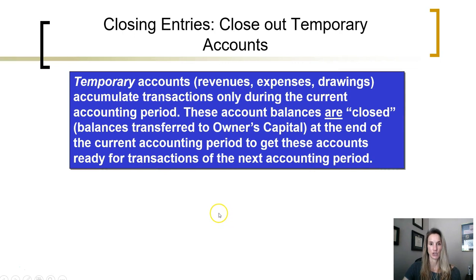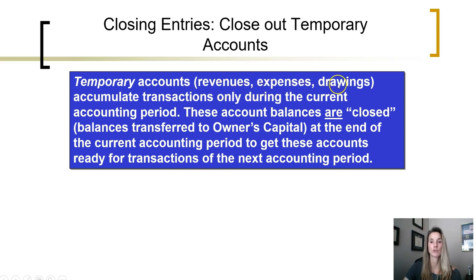When we are doing closing entries, the only accounts we close out are the temporary accounts — and by temporary we mean the accounts that hold transactions in them temporarily until the reporting process is done. Those accounts are revenues, expenses, and the owner's withdrawals, or the drawings account. These accounts accumulate transactions only during the current accounting period, which makes it easier for us to prepare financial reports if we keep track of these equity transactions in separate accounts.